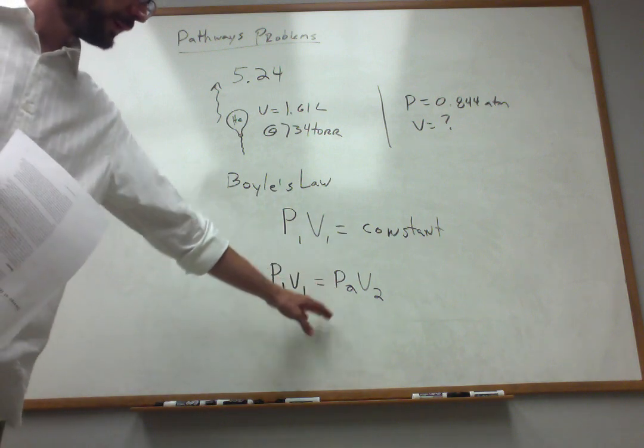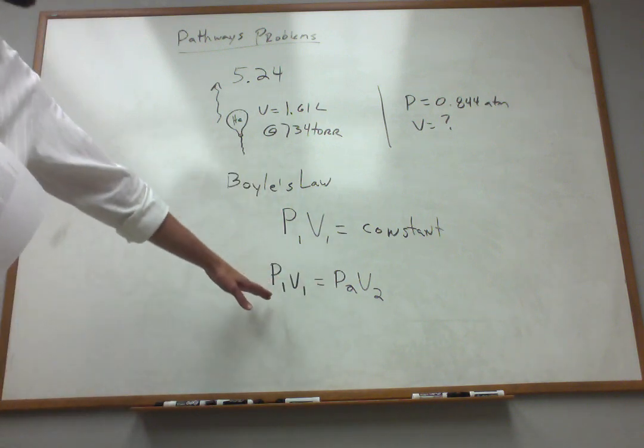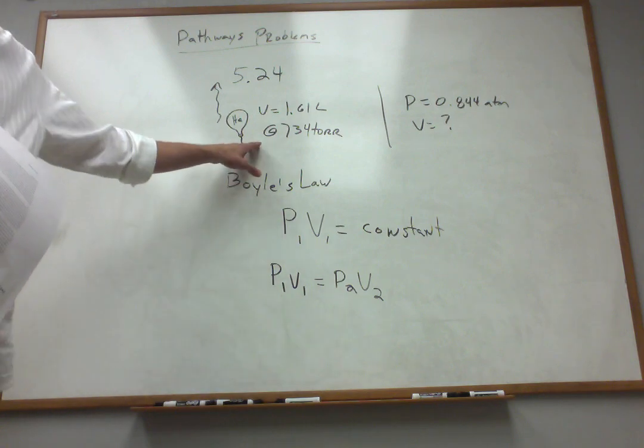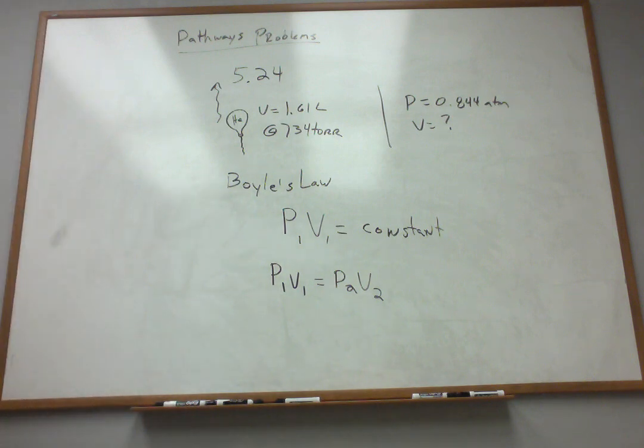Now, 1 and 2 correspond to the initial condition. Maybe that's volume and pressure 1. P2, V2 is my final condition. So that's what I mean by P1, V1, P2, V2. Now, all we've got to do to solve is start plugging in numbers with common units.